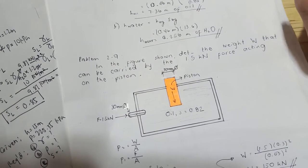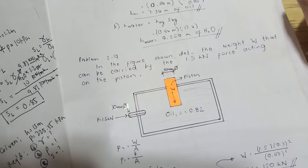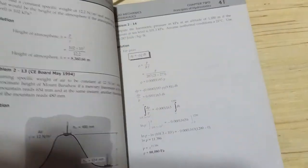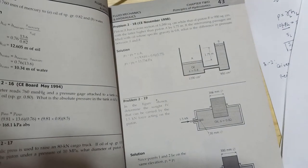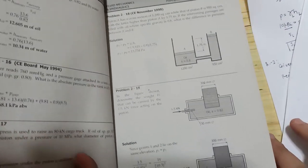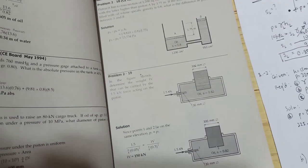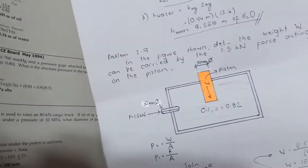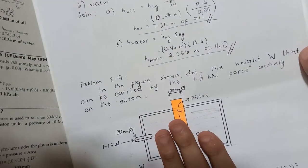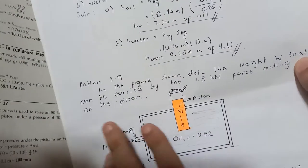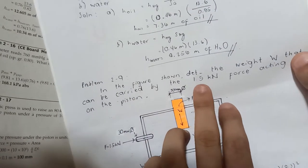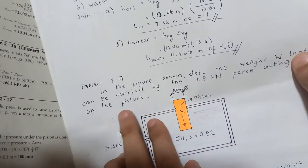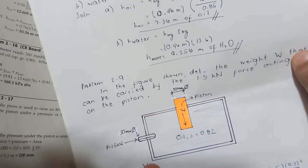Problem 9, which is Problem 2.19 in the book: In the figure shown, determine the weight that can be carried by a 1.5 kN force acting on the piston.